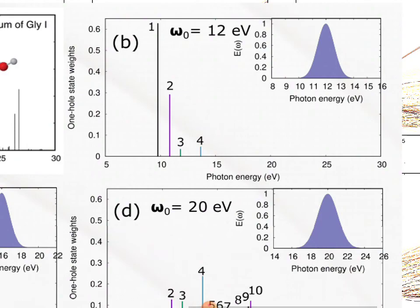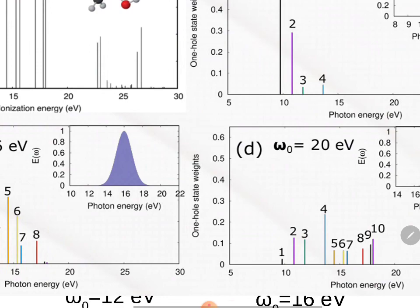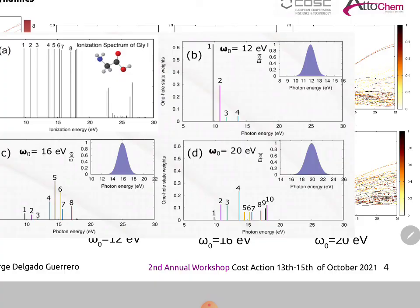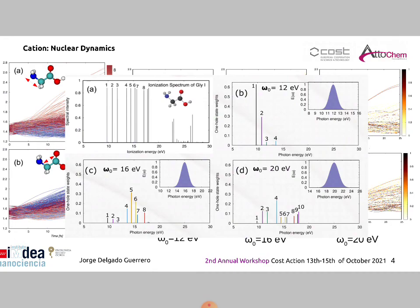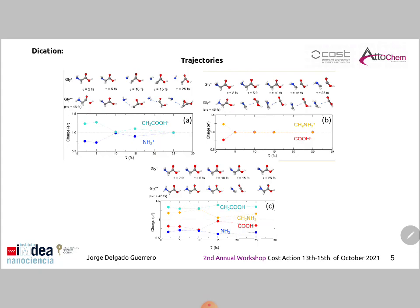In the case of the 12 eV pulse, we are mainly populating the two lowest cationic states, which explains why CC fragmentation is more probable. As we increase the central frequency of our pulse, we are populating higher cationic states, which are responsible for CN elongation. From these results, we can conclude that we can favor different fragmentation dynamics just by varying the central frequency of the pulse.